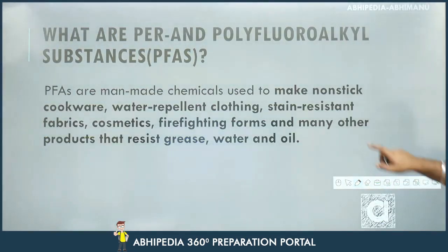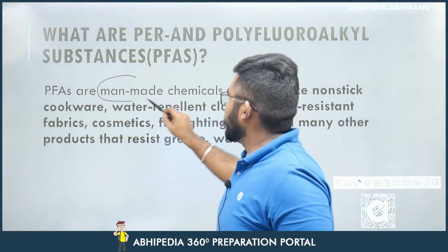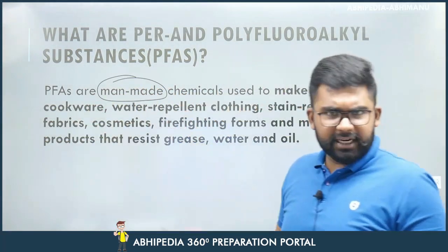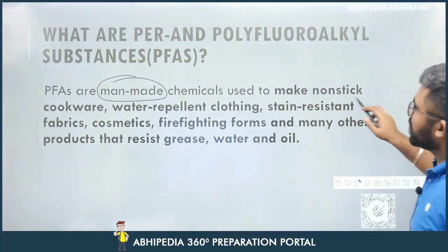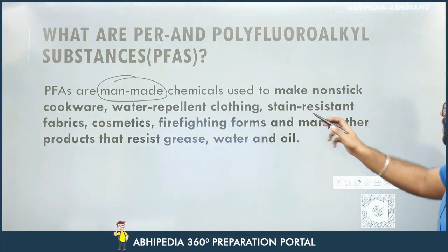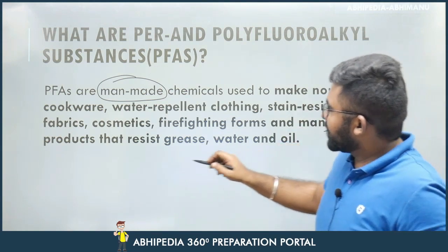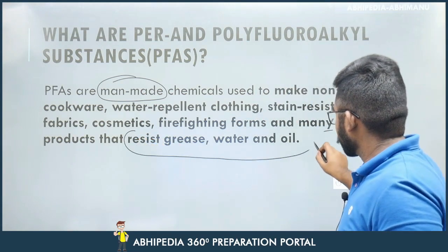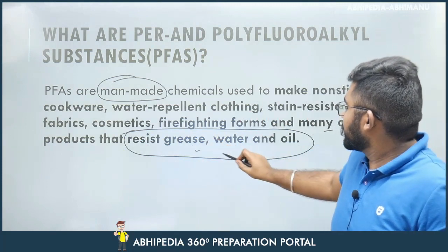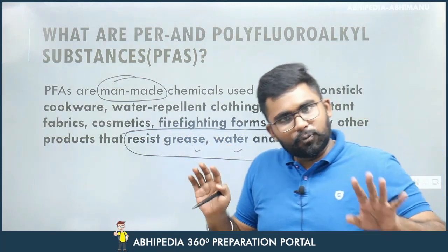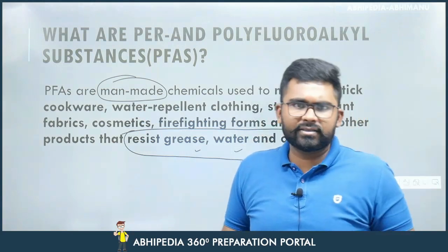PFAS ke jo uses hain, pehle statement dekhte hain, phir us slide pe jayenge aur check kar lenge. PFAS are keywords jiske upar question aa sakta hai ya statement-based ban sakta hai. These are man-made chemicals used to make non-stick cookware, water-repellent clothing, stain-resistant fabrics, cosmetics, fire-fighting foams and many other products. Any product that resists grease, water and oil will probably have these chemicals. Man-made chemicals hain aur ye application aur production — dono time pe release hote hain.